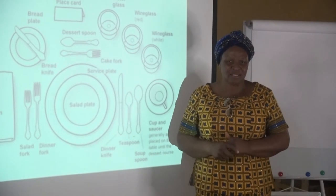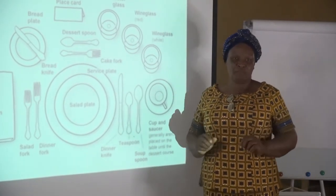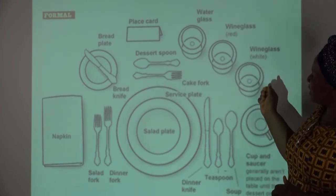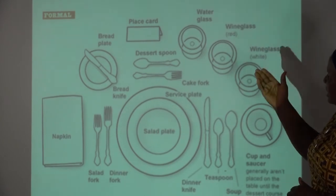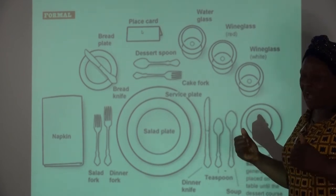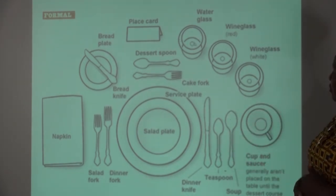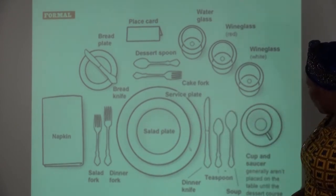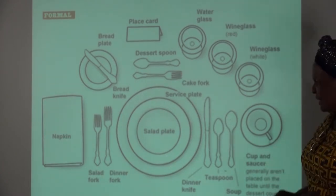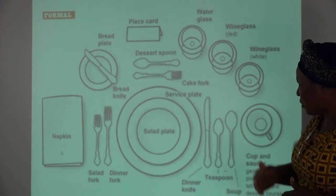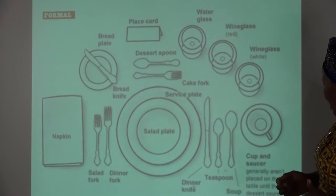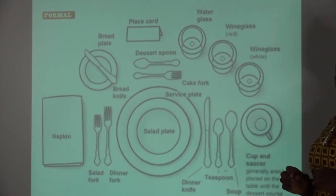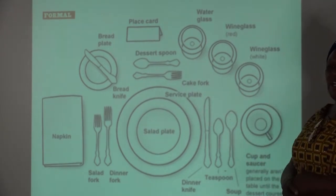Formal table setting has its peculiarities. All the eating implements must be arranged on the table, and the courses must also be there. We can see the place card for the menu and the courses. Then we have the water glass, the wine glass for red or white wine, the service plates, the cup and saucer, the napkin, the salad fork, the dinner fork, the bread knife, the bread plate, the dinner knife, the teaspoon, and the soup spoon. All these are seen on a formal table setting.